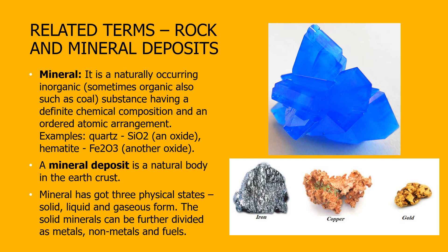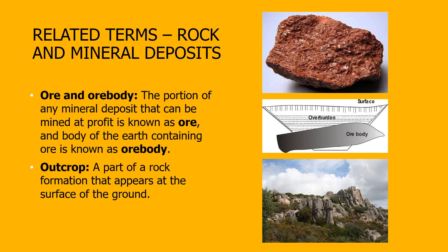A mineral deposit is a natural body in the earth's crust. Mineral has got three physical states: solid, liquid and gaseous form. The solid minerals can be further divided as metals, non-metals and fuels. The portion of any mineral deposit that can be mined at profit is known as ore, and the body of the earth containing ore is known as the ore body. A part of a rock formation that appears at the surface of the ground is called an outcrop.